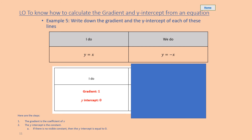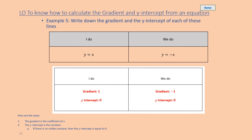Pause the video while you have a go at y equals negative x. Well done — the gradient is negative one, and because there's no visible constant, the y-intercept is equal to zero.